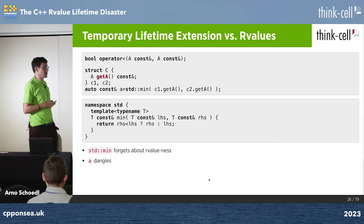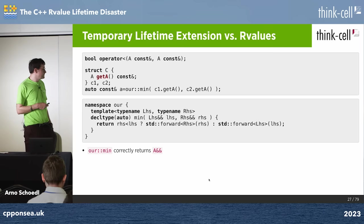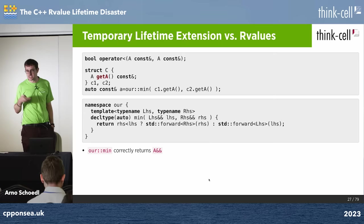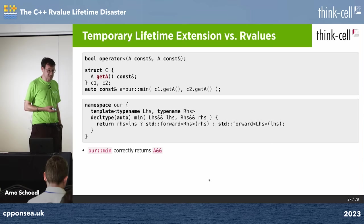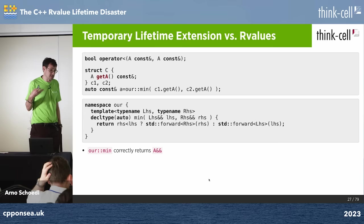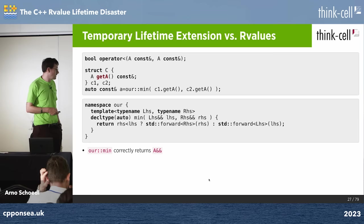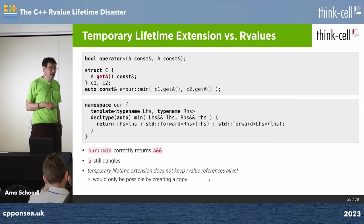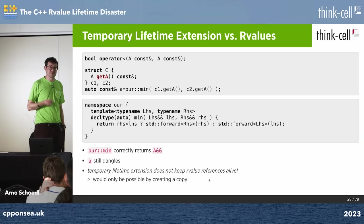If we rewrite min with universal references — taking the two arguments by universal reference and forwarding them out — that's how we'd do it today. But the problem is that when you assign the result to a const ref, it still dangles. Even if the result is an R-value reference at that point, it's still a reference — not a pure value — so there's nothing whose lifetime temporary lifetime extension could extend. You again get a dangling reference.